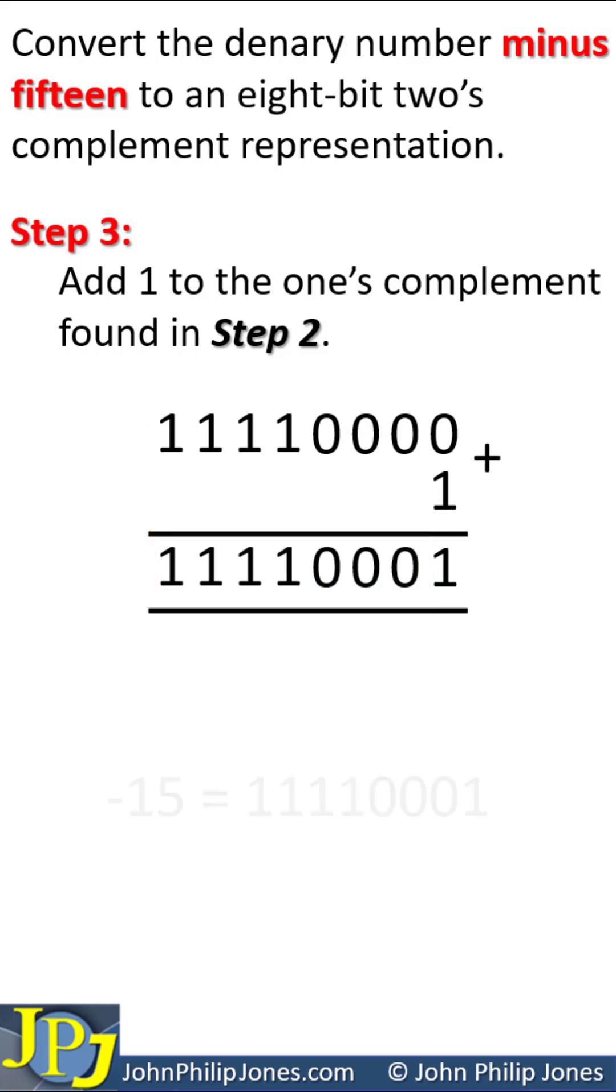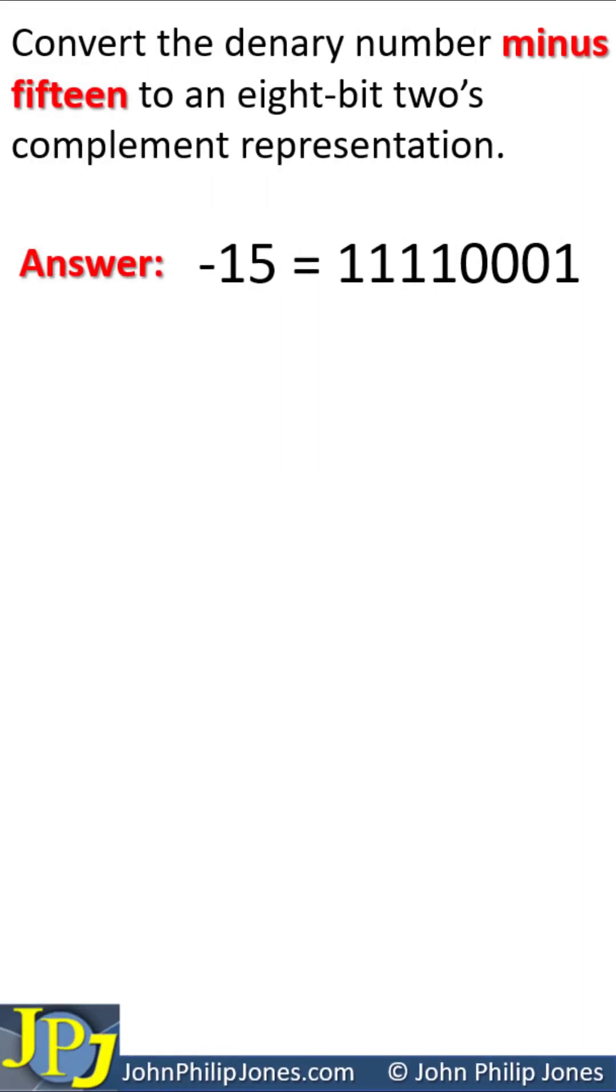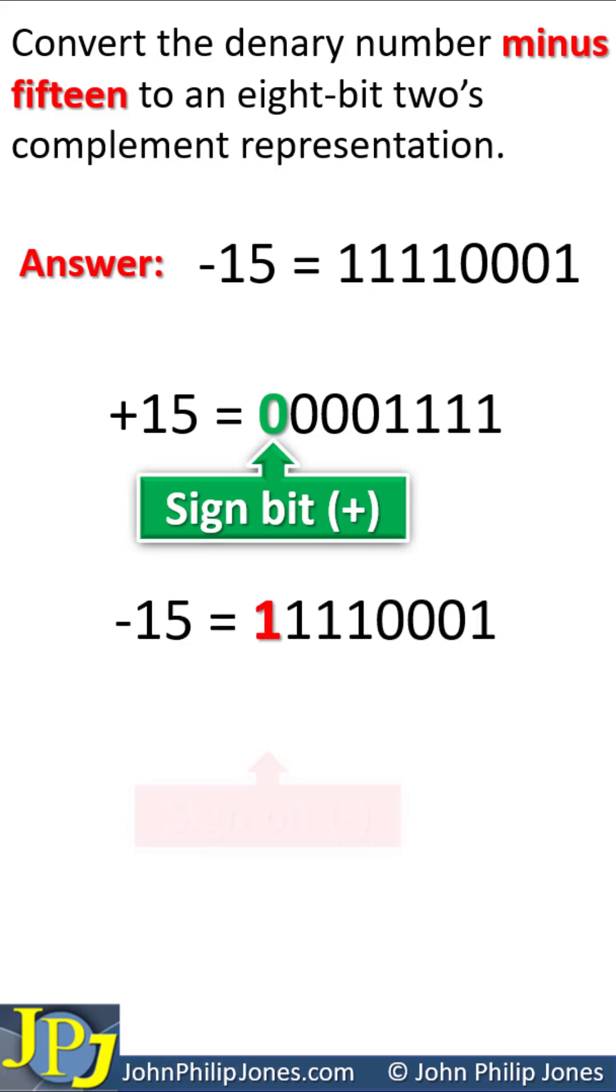So we can say that minus 15 is equal to this binary pattern here. We started the process with plus 15, and if you look in this position we have the sign bit representing the plus sign. We end up with the two's complement where this is the sign bit representing negative.